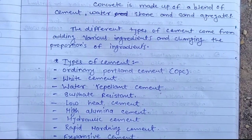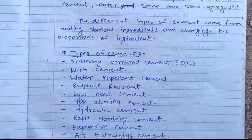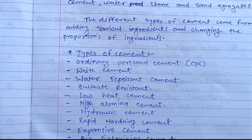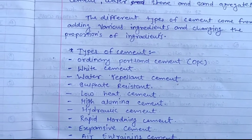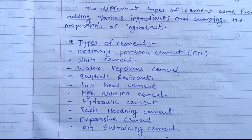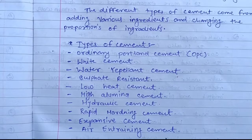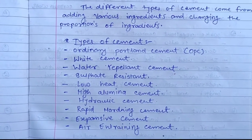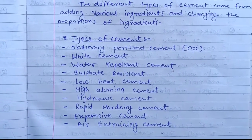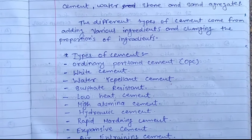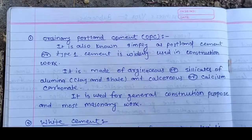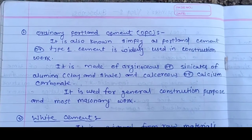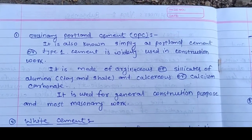The types of cement include: Ordinary Portland Cement (OPC), white cement, water repellent cement, sulfate resistant cement, low heat cement, high aluminum cement, hydraulic cement, rapid hardening cement, expansion cement, and air entraining cement.